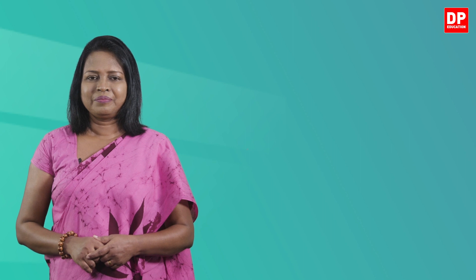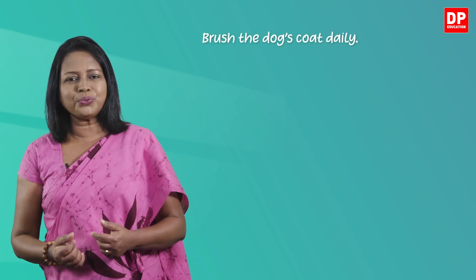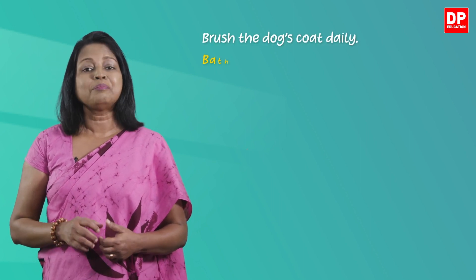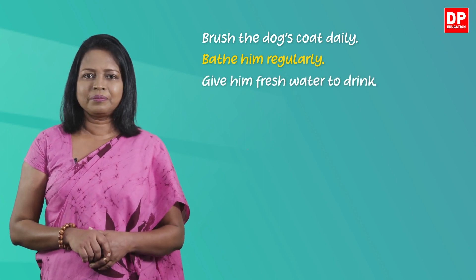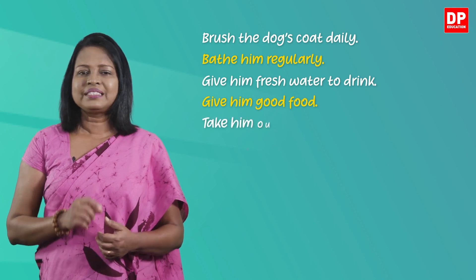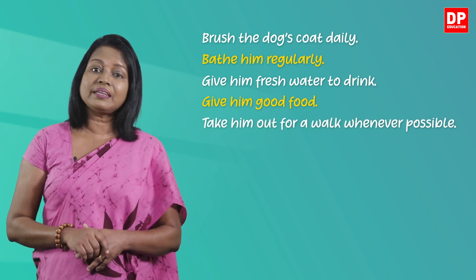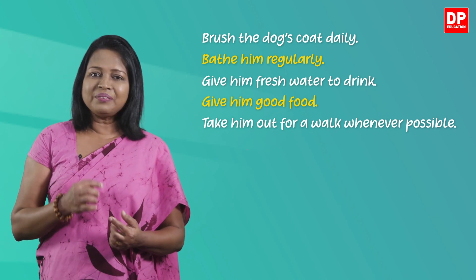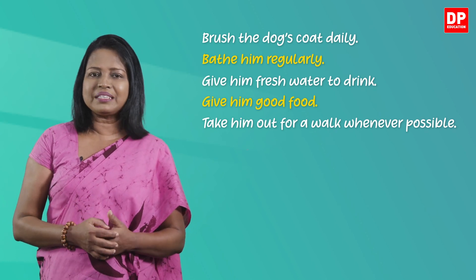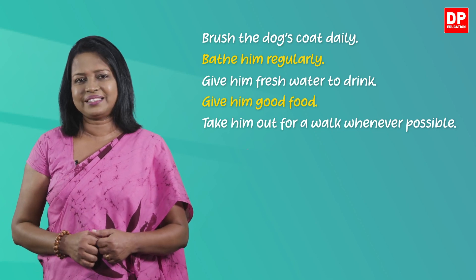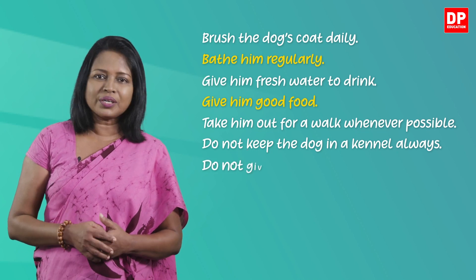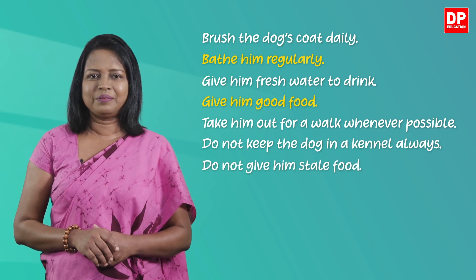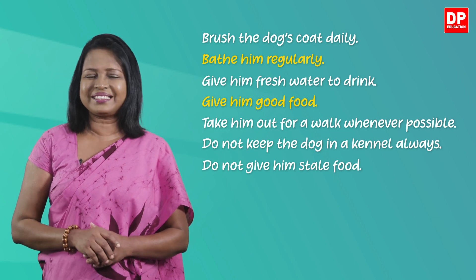Here are some sentences that we can write: Brush the dog's coat daily. Bathe him regularly. Give him fresh water to drink. Give him good food. Take him out for a walk whenever possible. You can even write sentences with imperative verbs in the negative form, like: Do not keep the dog in a kennel always. Do not give him stale food. Hope you could write the sentences.